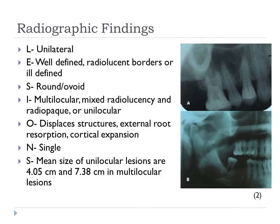Radiographically, the lesions are localized unilaterally to the periradicular area and can be found anywhere in the maxillary or mandibular jaw, most commonly the anterior mandible. The edges are usually well-defined radiolucent borders due to the slow growth, while faster-growing lesions will present ill-defined borders. The shape is normally round or ovoid. The majority of these lesions are multilocular, but some can also be unilocular.